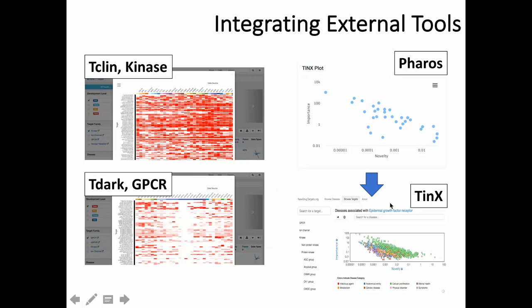Another external tool is the TinX plot, which plots novelty versus importance of a given target derived from bibliometric analysis. We implemented a simplified version within Pharos itself so for a given target you can see novelty versus importance, and we link out to the full TinX application developed by New Mexico, which is much more fully featured. Going forward, we expect to either include other useful visualizations within Pharos or link out to external providers when feasible.